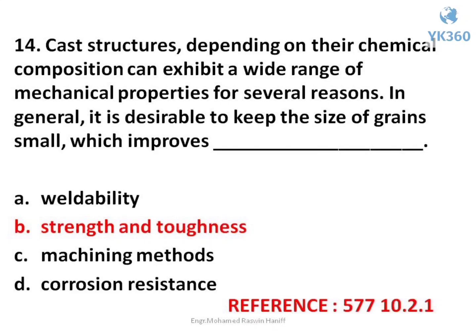Question number 14. Cast structures, depending on their chemical composition, can exhibit a wide range of mechanical properties for several reasons. In general, it is desirable to keep the size of grain small, which improves — options are: A. Weldability, B. Strength and toughness, C. Machining methods, D. Corrosion resistance. Answer is option B. Strength and toughness.